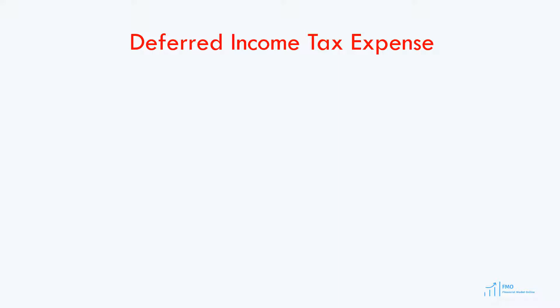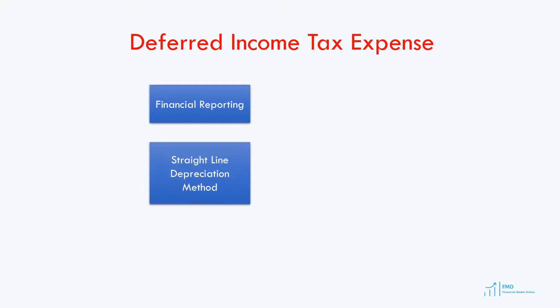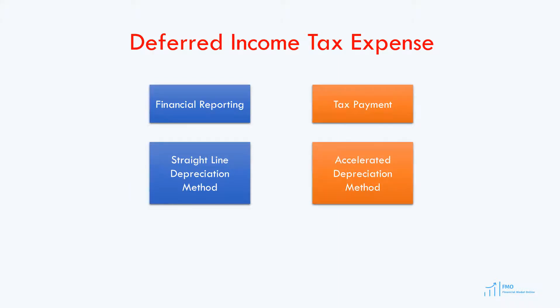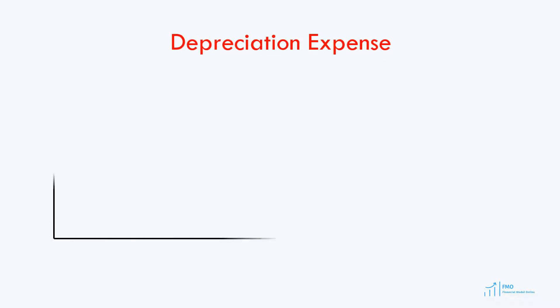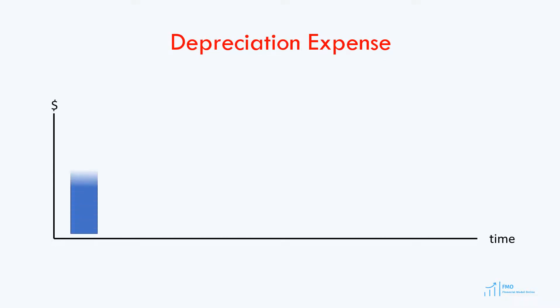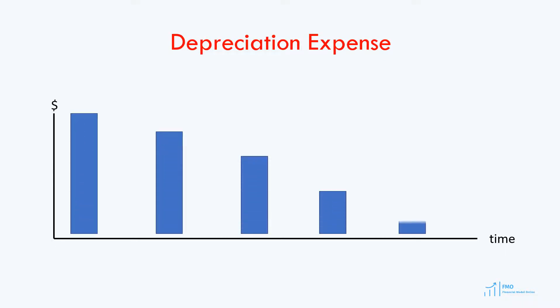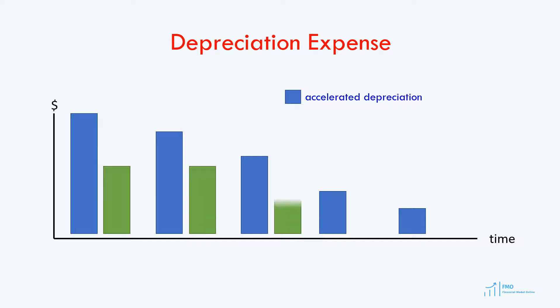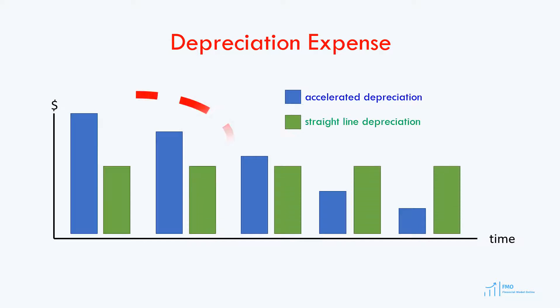For example, for financial reporting, companies usually select a straight-line depreciation method. However, for the purpose of paying taxes and under the tax laws, a company may select the accelerated depreciation method. The accelerated depreciation method results in depreciation expense being greater than under the straight-line method in the early life of the asset. Therefore, the company pays less tax in the earlier period of the project.